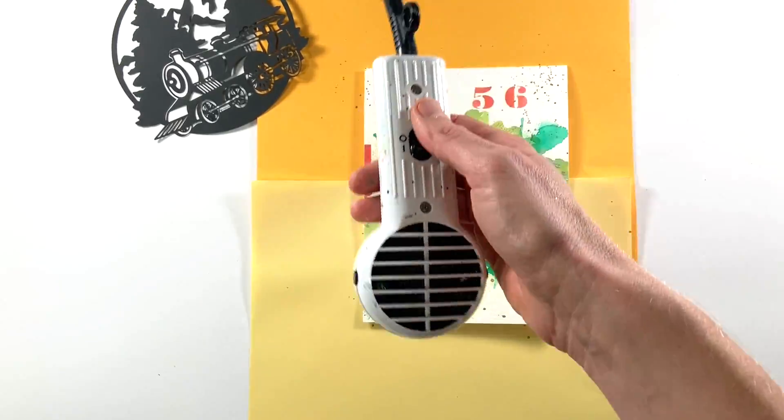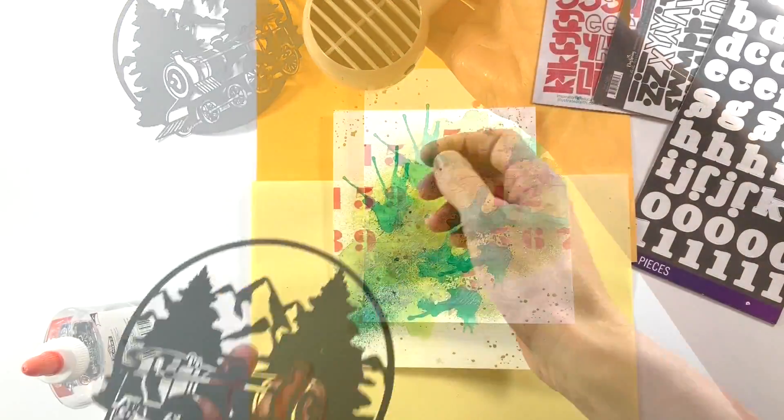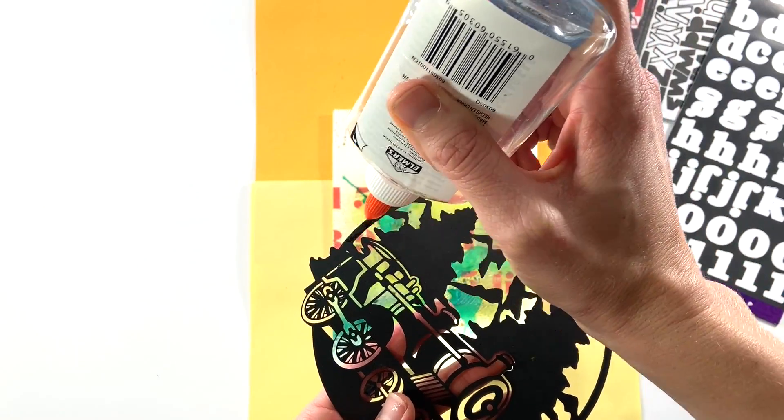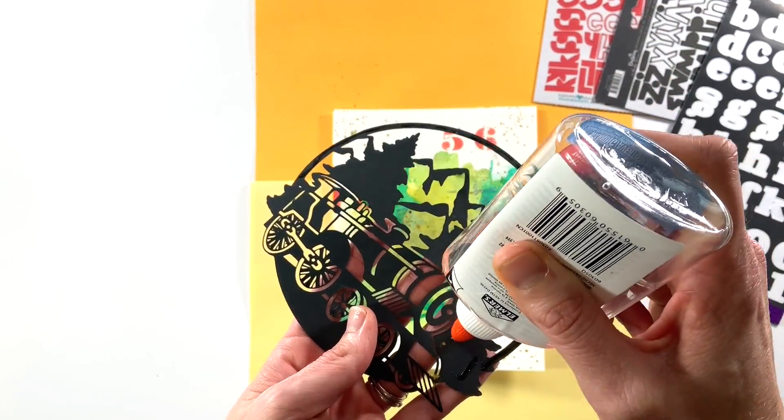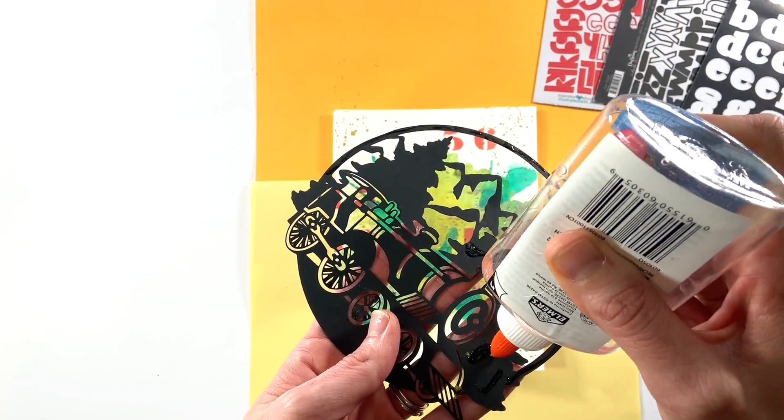Once again drying between every layer and then I will come back in and add some glue. I'm actually out of my normal Tombow adhesive so I'm going to use just some Elmer's glue to cover the back of this cut file and place it down on the page.